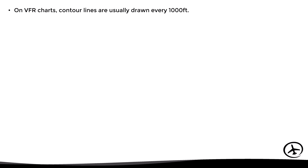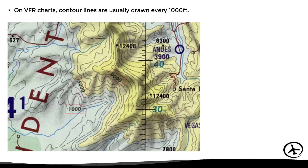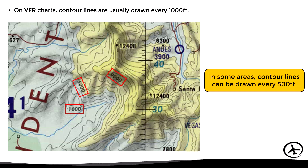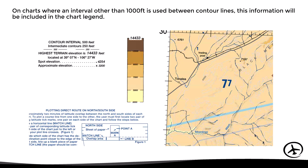On VFR charts, contour lines are usually drawn every 1,000 feet, however in some areas contour lines can be drawn every 500 feet — it all depends on the type of chart and its scale. On charts where an interval other than 1,000 feet is used, this information will be included in the chart legend, as we can see in this example of a sectional chart where the contour lines are drawn every 500 feet and intermediate contours every 250 feet.